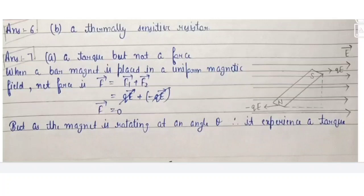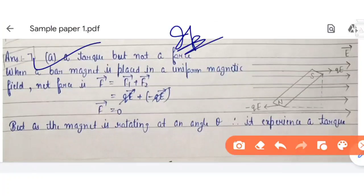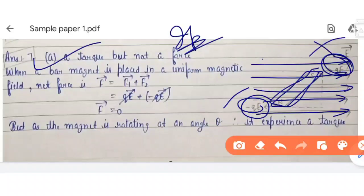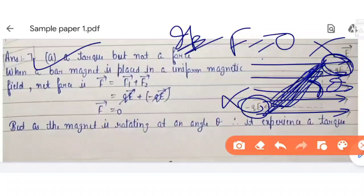Next: a bar magnet is kept in a uniform magnetic field — what does it experience? This is a very important question. In a uniform magnetic field, the forces on the two poles cancel out, so the net force is zero. However, if the magnet is at some angle θ, there is a torque that tends to rotate it. So there is torque but no net force.